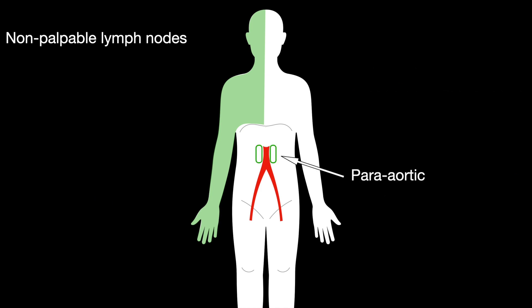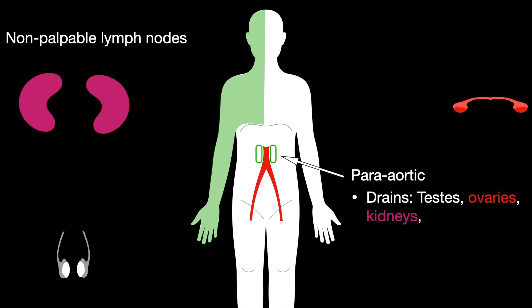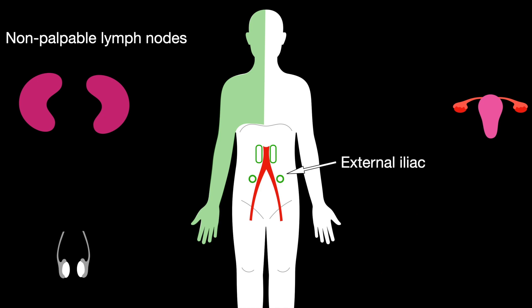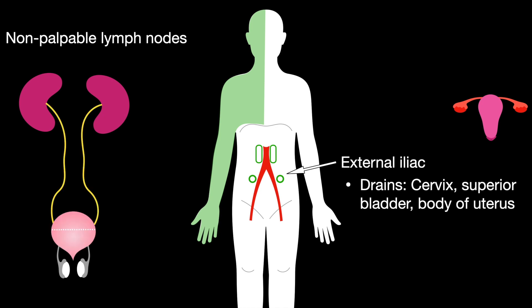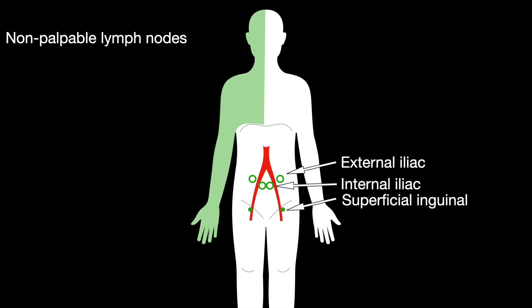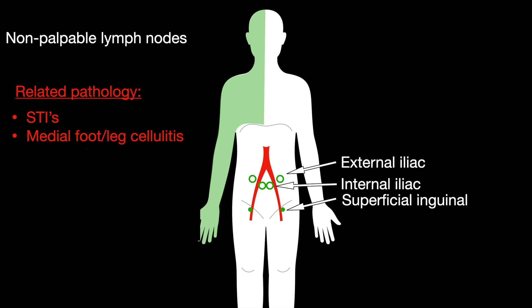The paraaortic lymph nodes drain the testes, ovaries, kidneys, and uterus. Related pathology is metastasis. The external iliac lymph nodes drain the cervix, superior bladder, and body of uterus. The internal iliac lymph nodes drain the lower rectum to the anal canal, bladder, middle third of the vagina, cervix, and prostate. The external iliac, internal iliac, and superficial inguinal lymph nodes are associated with sexually transmitted infections and medial foot and leg cellulitis.